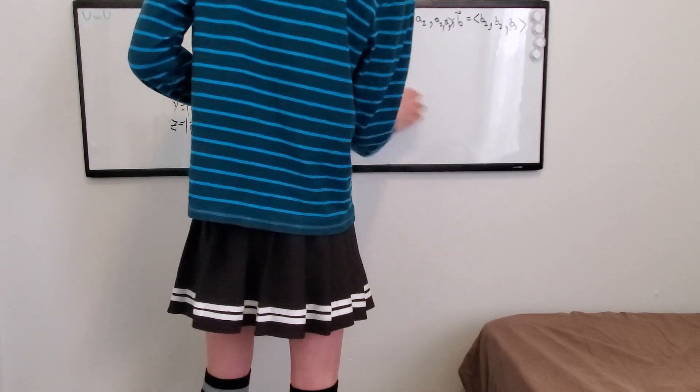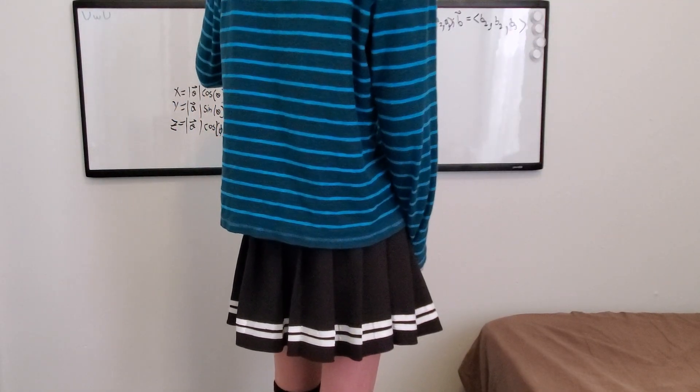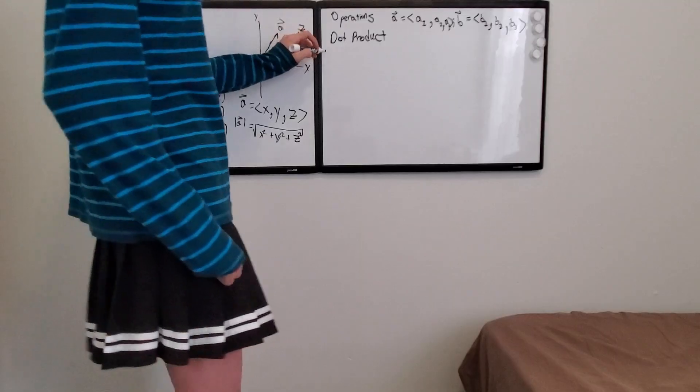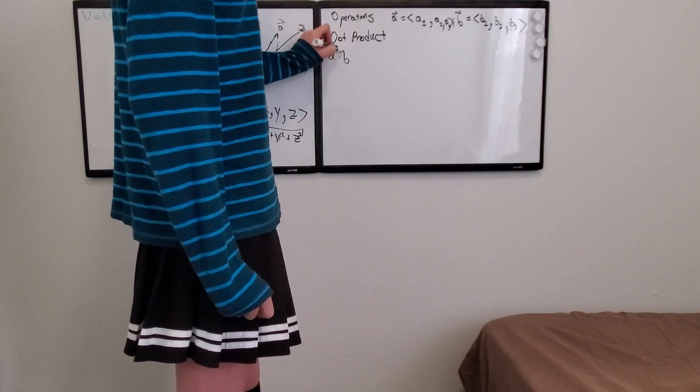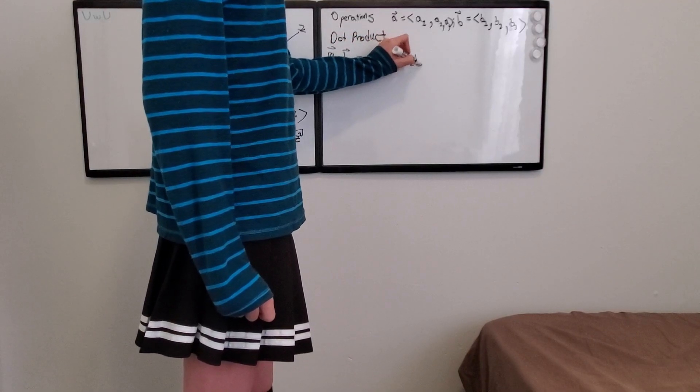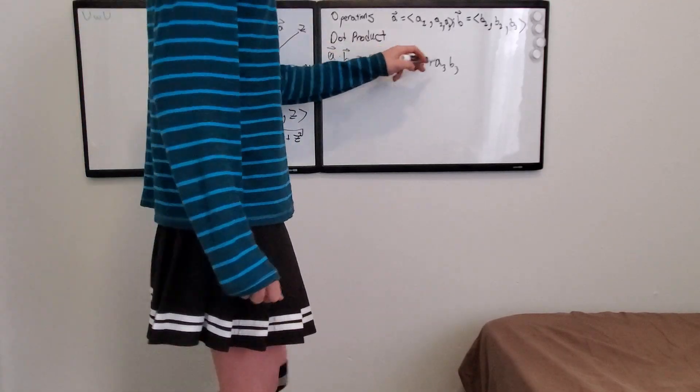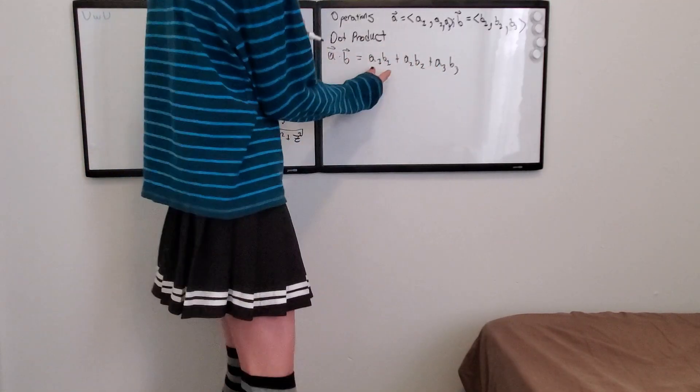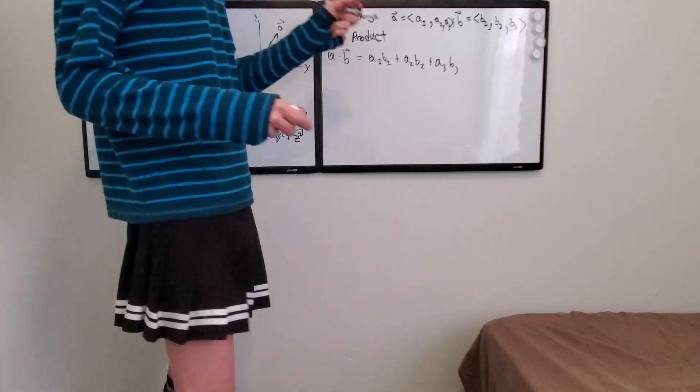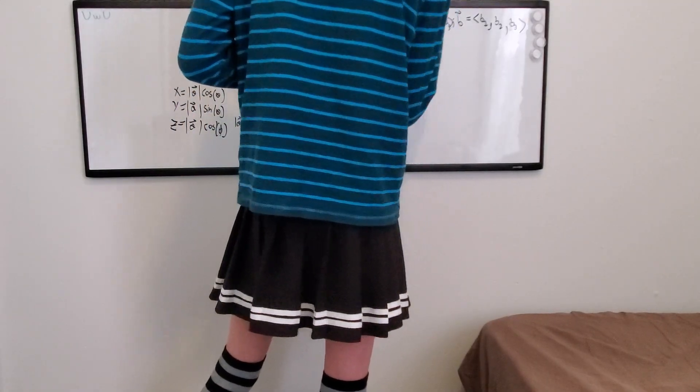The dot product for 3D vectors: so once again, A dot B is equal to A1 B1 plus A2 B2 plus A3 B3. So you're just multiplying each of the components, X, Y, and Z together. The X components, the Y components, and the Z components. And that'll give you a number. It gives you a number every time. It doesn't give you a vector. So that's a lot like the 2D vectors.